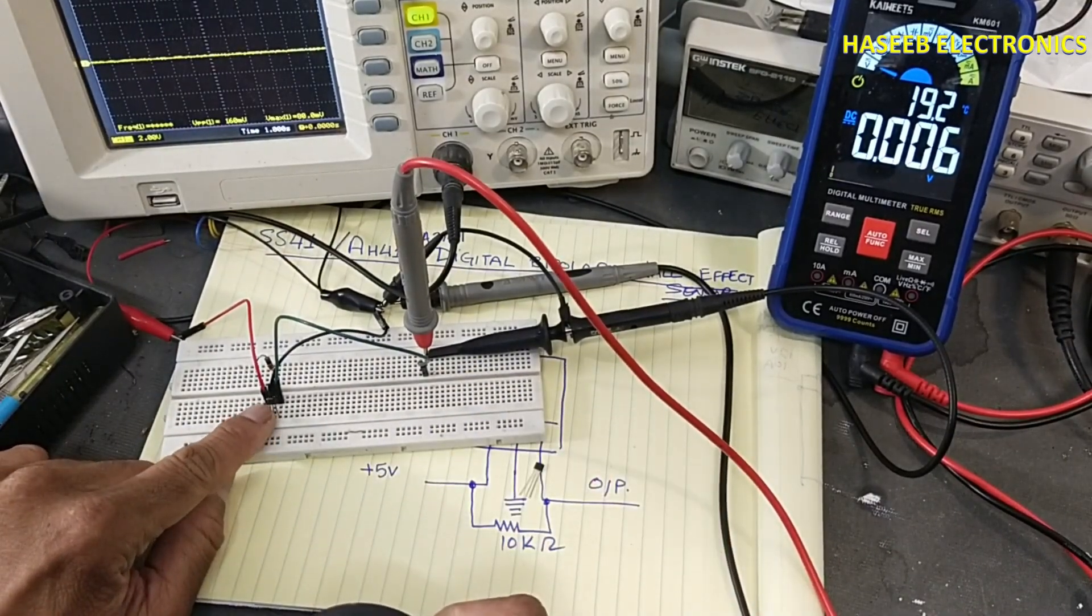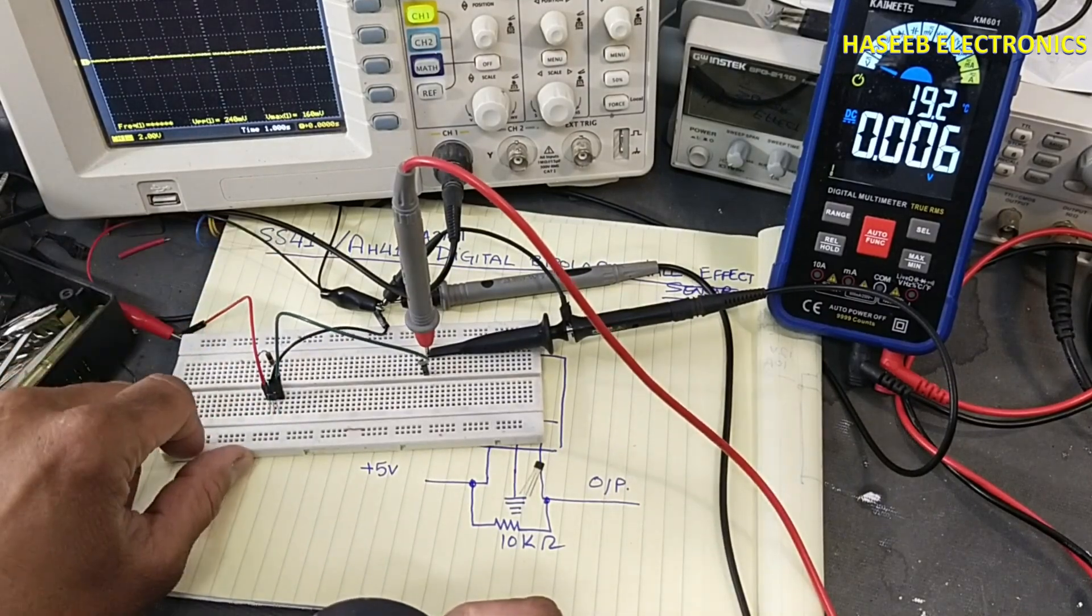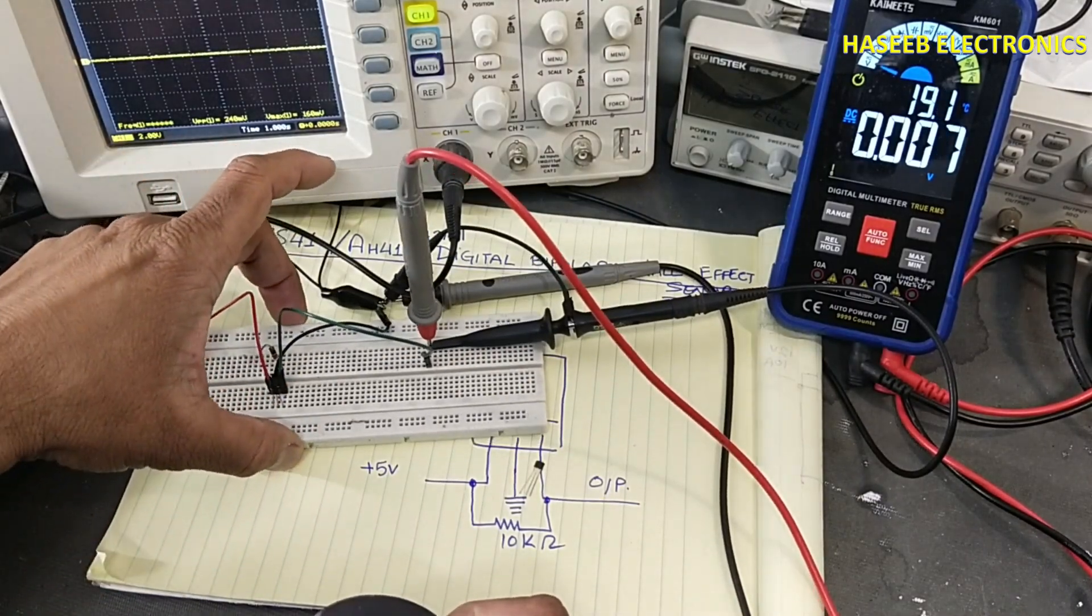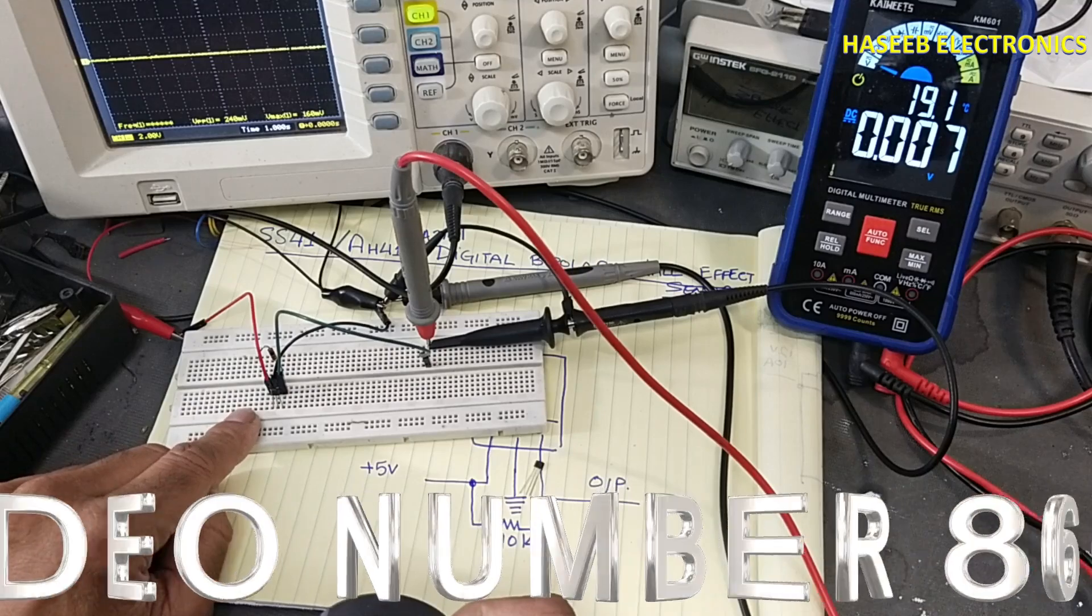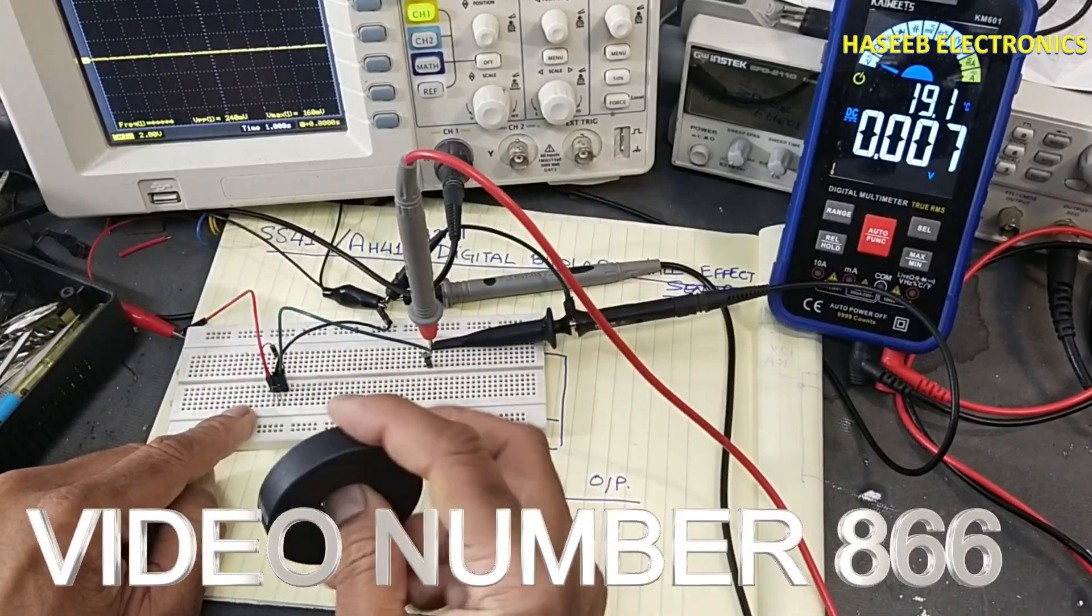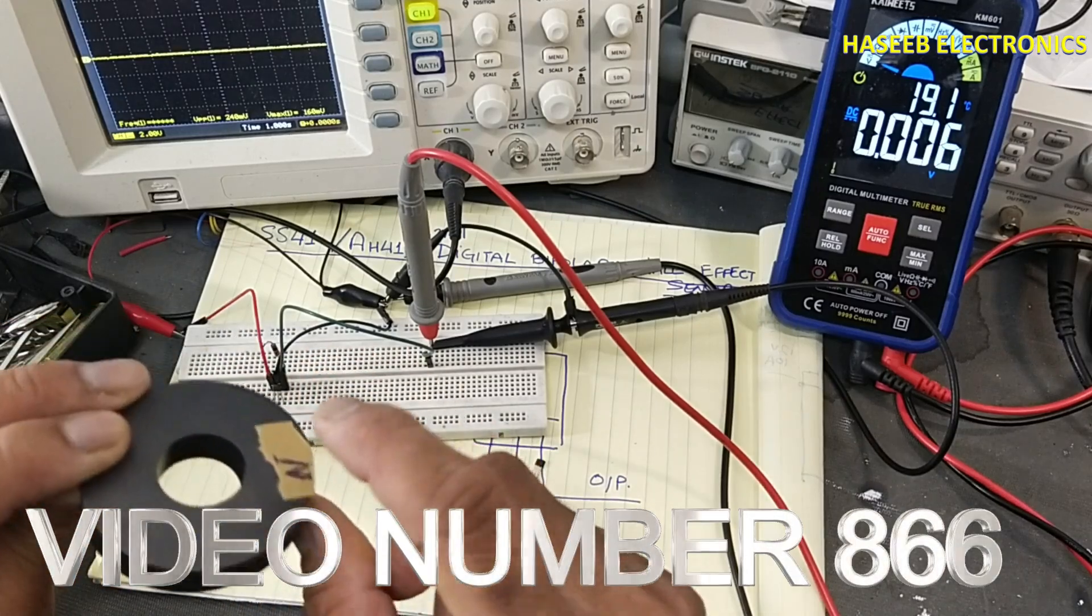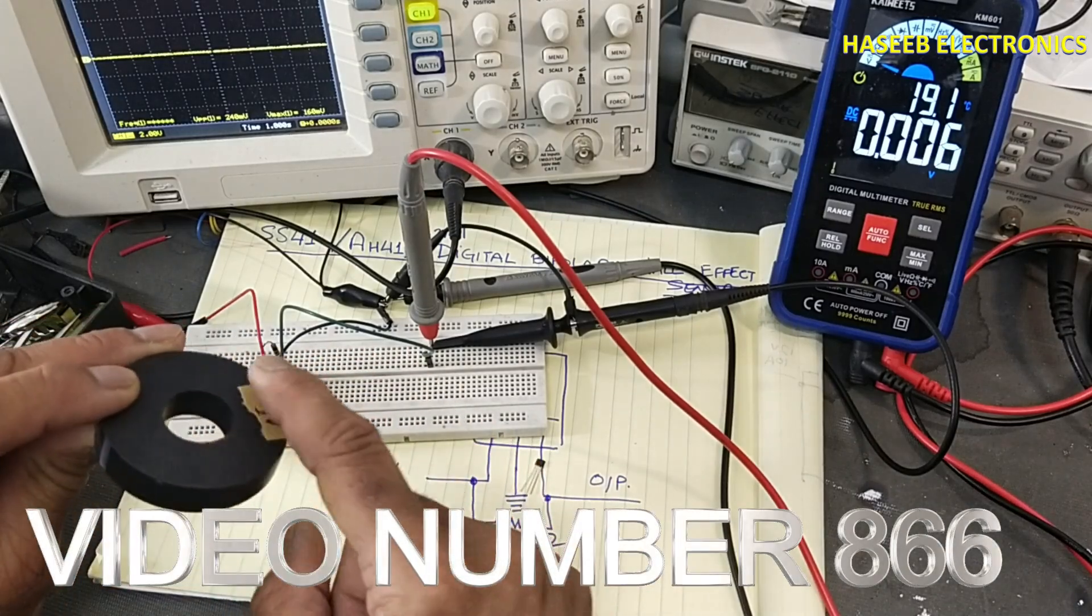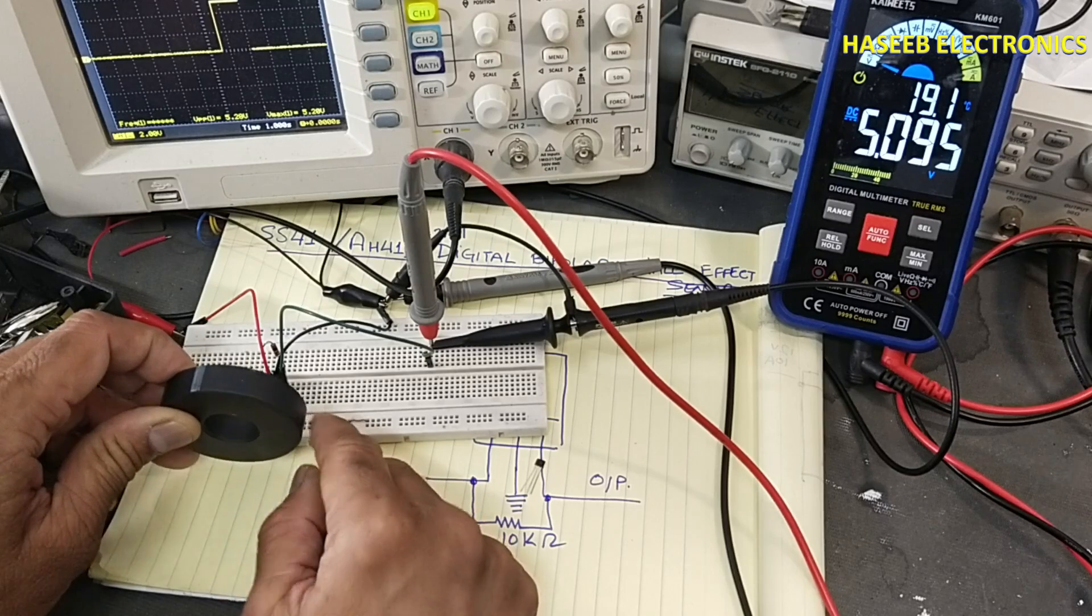This is SS41 or AH41 or A3141. If you have not watched that video, I will suggest to watch that video, video number displayed on the screen. When there is north pole in front of the sensor, the output is 5 volt.